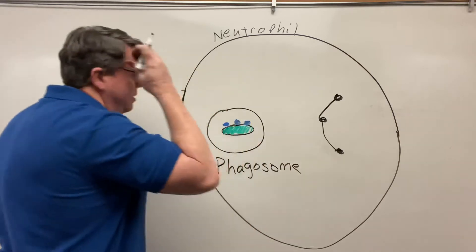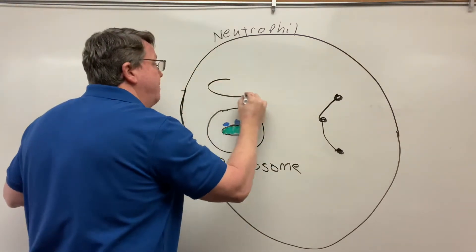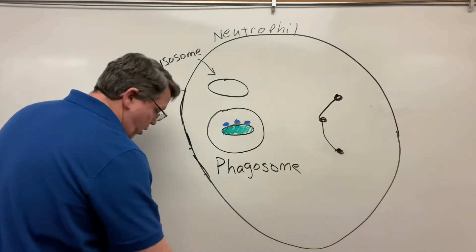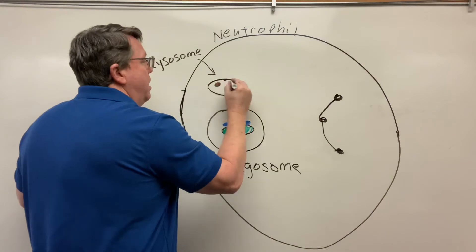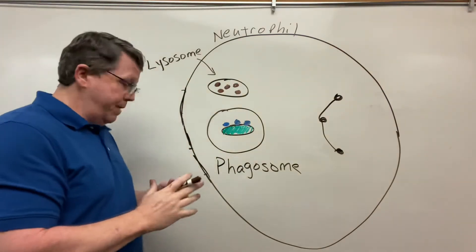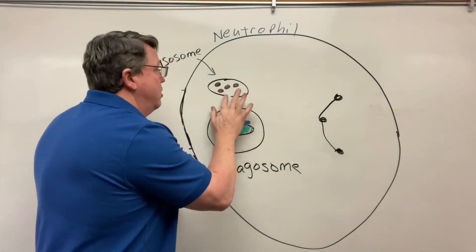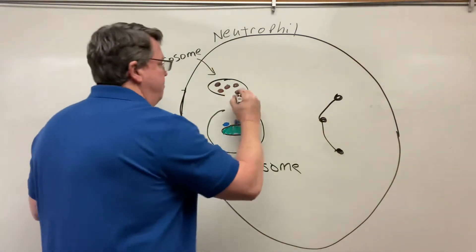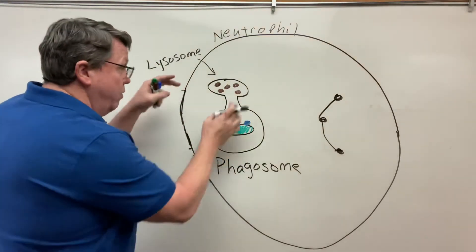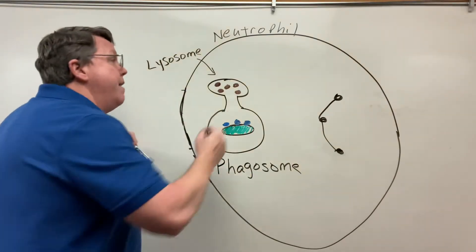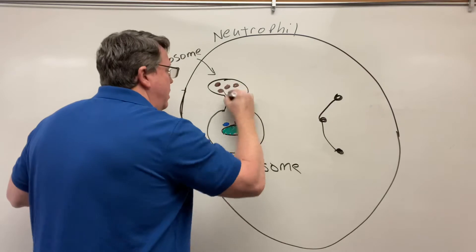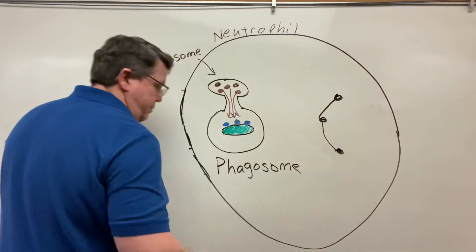Inside the cell you basically have some other types of vesicles, which are known as a lysosome. Inside of lysosomes we have something called hydrolytic enzymes, and these are proteins that are designed to break down things. What's going to happen now is my lysosome is going to bond with my phagosome. When it does that, this is now known as a phagolysosome. These hydrolytic enzymes are going to enter into the phagosome.